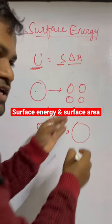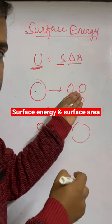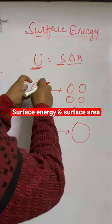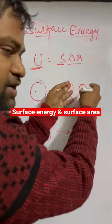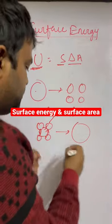So here the surface area is increasing, so surface energy also will increase. That means to break a bigger drop to smaller drops, we have to provide energy so that there will be an increase in area and it will be broken.